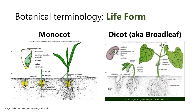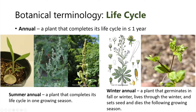Cotyledons are not technically the true leaves. The true leaves in dicots typically have branched venation, and their flower parts are in multiples of fours and fives.